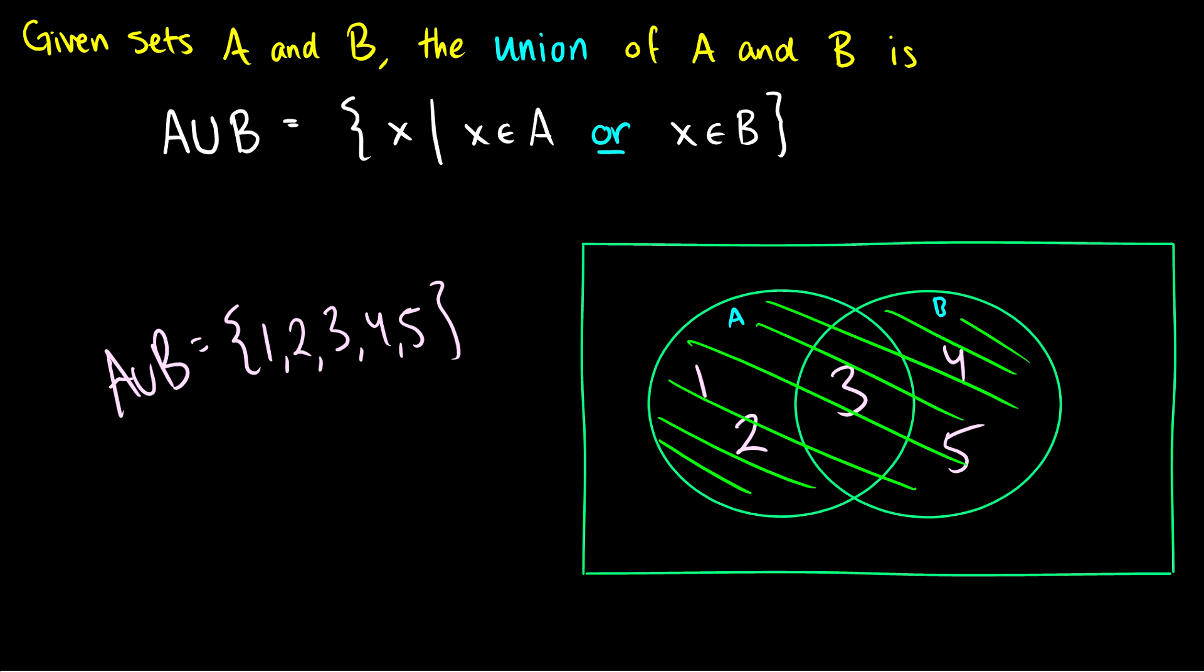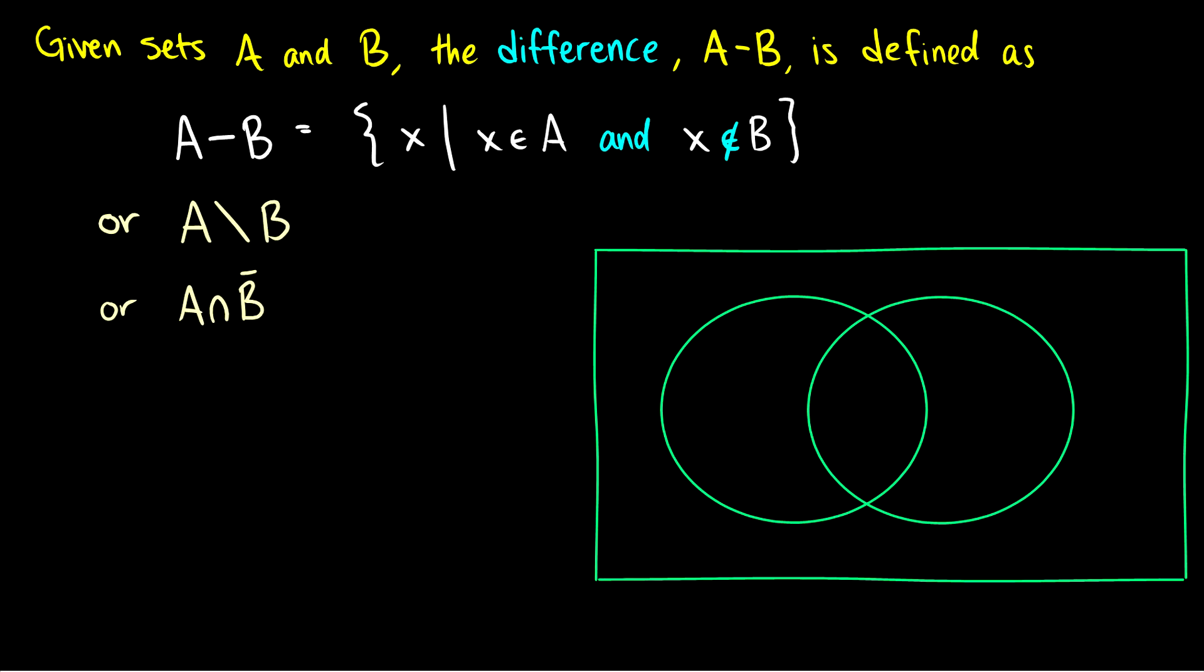We could write 3 twice but remember that repeated elements don't count. But that is a good way if you want to make sure you're including every element is just write out all of A and then write out all of B.